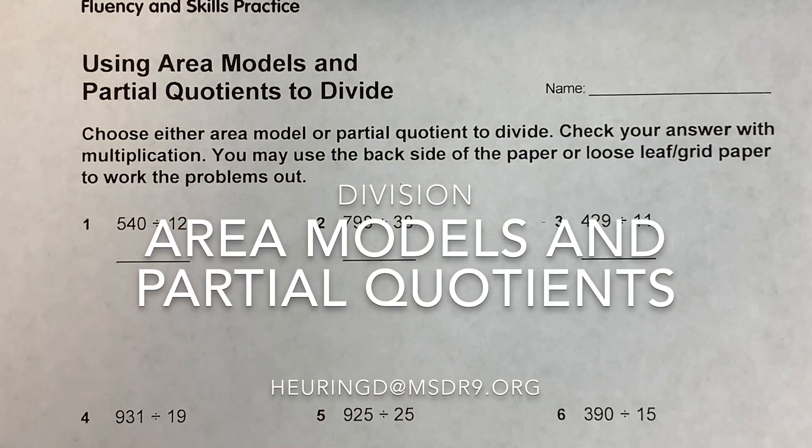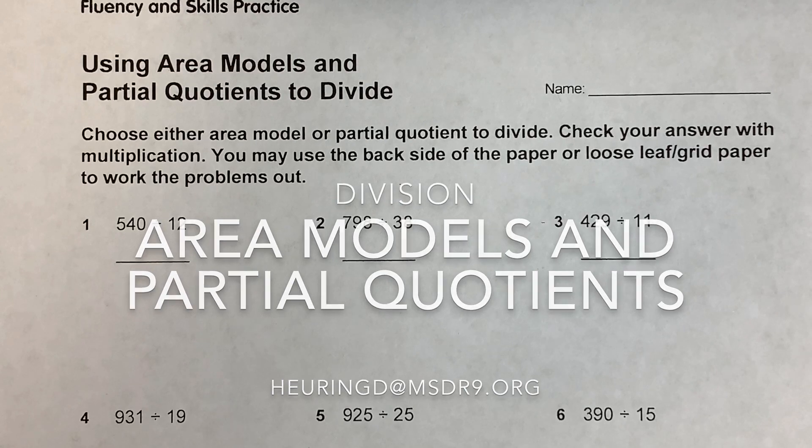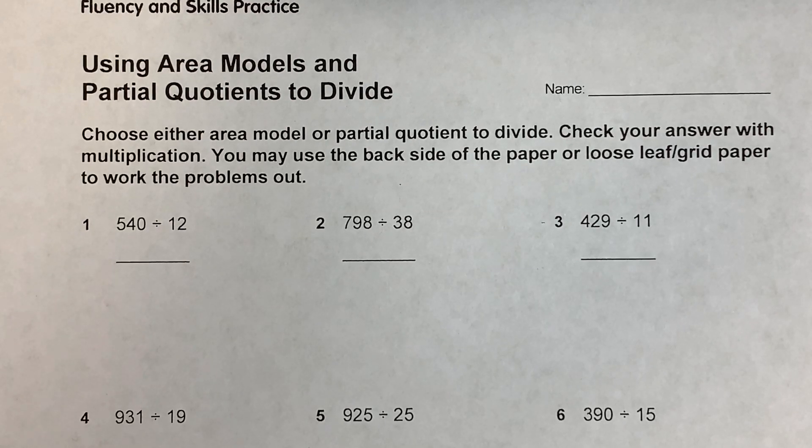So we're all in two division now. We have a quiz and test coming up. The first thing is we need to understand what we're doing when we divide. There's two different ways we're talking about in class: area model and partial quotient. It's pretty much the same way, just two different forms of subtracting and looking at how many things you have left.